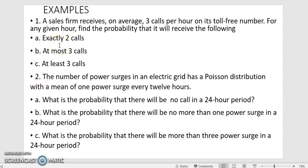A sales firm receives on average 3 calls per hour on its toll-free number. For any given hour, find a probability that it will receive the following: a. exactly 2 calls, b. at most 3 calls, and c. at least 3 calls. To solve this, before then, what is our mean? Our mean is 3.